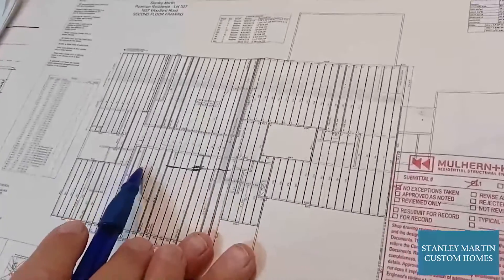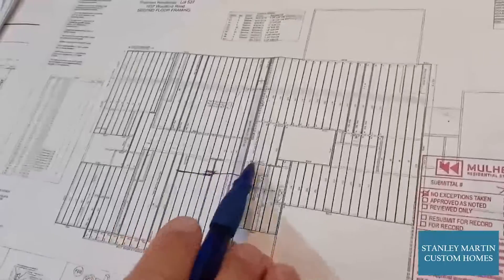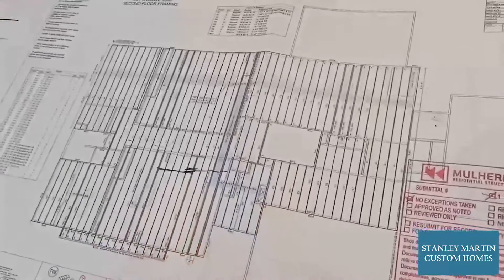Each one of these trusses has a letter and a number that coordinates to a sheet which stands here. You can see it coordinates to T3G.